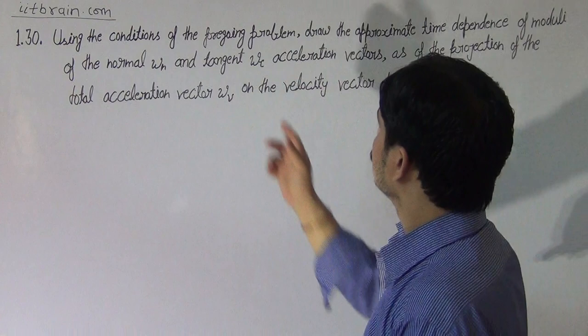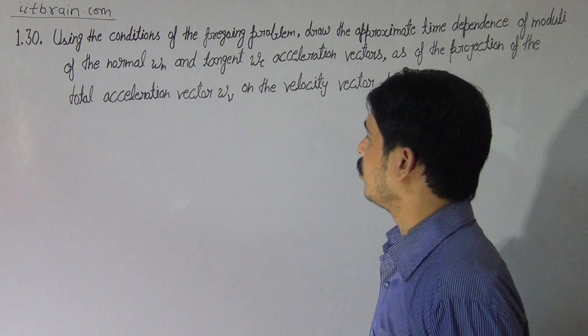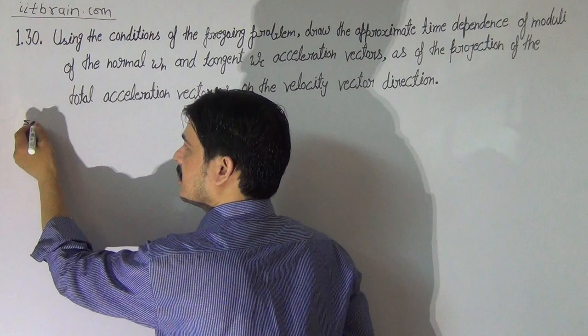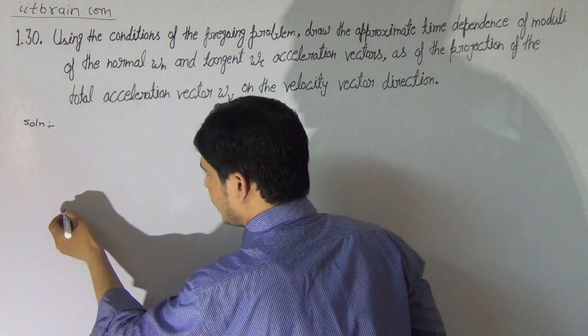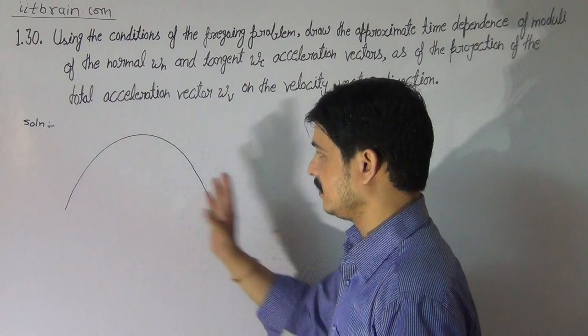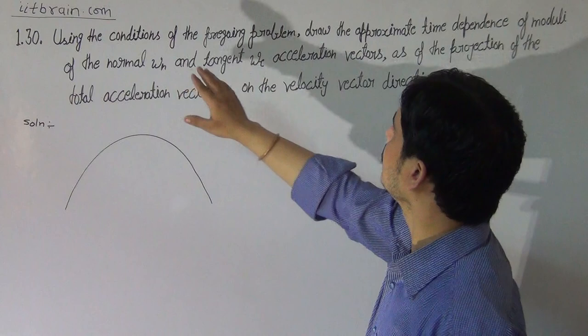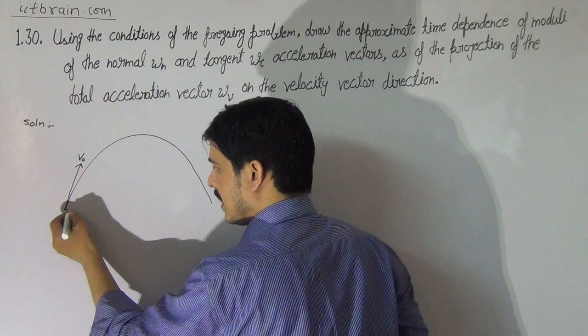Hello students, this is problem 1.30. Not using the conditions of the foregoing problem, draw the approximate time dependence of modulus of normal and tangential acceleration vectors. Using the conditions of the foregoing problem means problem 1.29 — we have a parabola for a projectile with time of flight, range, maximum height, and radius of curvature. The initial velocity of the particle will be the same as in the previous problem: V-naught at angle alpha from the horizontal.